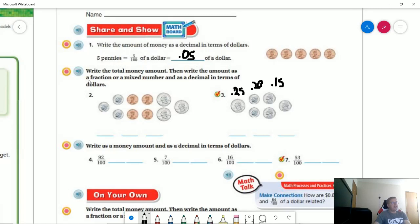So as a fraction or mixed number, we would have 25, 45, 60 cents.